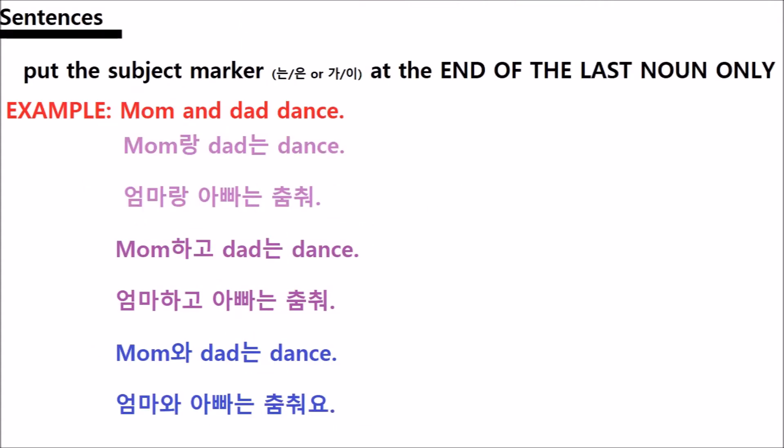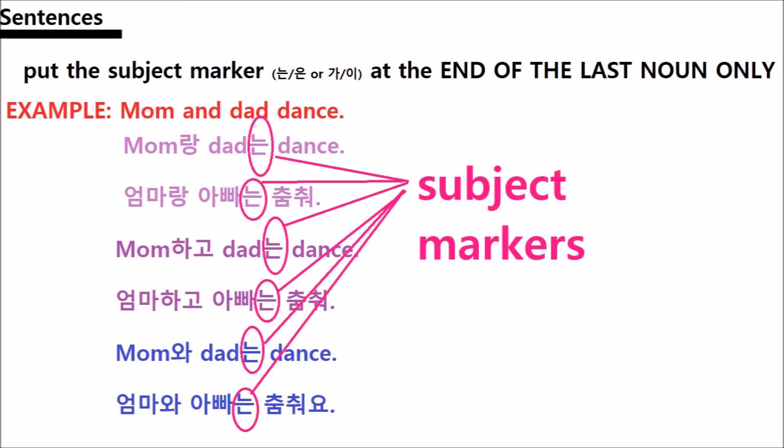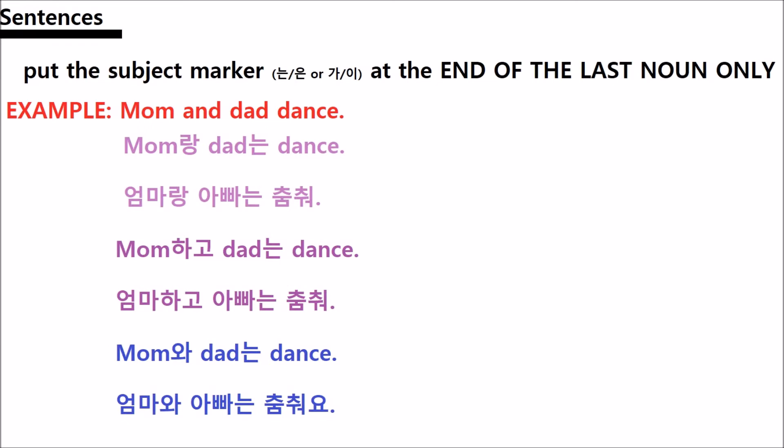Now let's make sentences. If you're using 'mom and dad' as the subject of your sentence, you put the subject marker at the end of the last noun in the list only. So it looks like this: 엄마 랑 아빠는 춤 춰 (eomma rang appa-nun chum chwo). Eomma hago appa-nun chum chwo. Eomma wa appa-nun chum chwo. We would do the same thing with the other subject markers too. I have a video on subject markers in the description if you're interested. If you don't know subject markers, you can still understand the rest of the lesson without it.